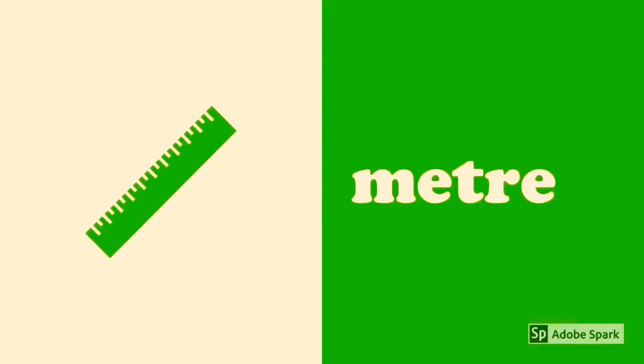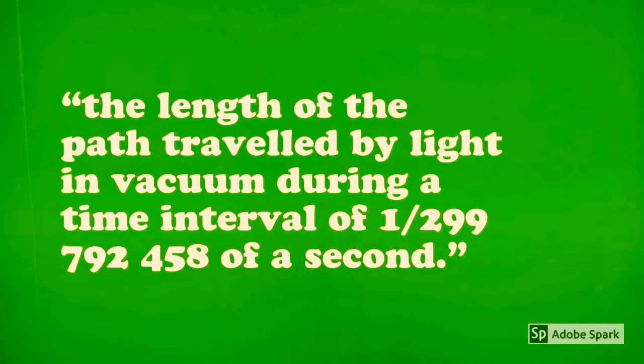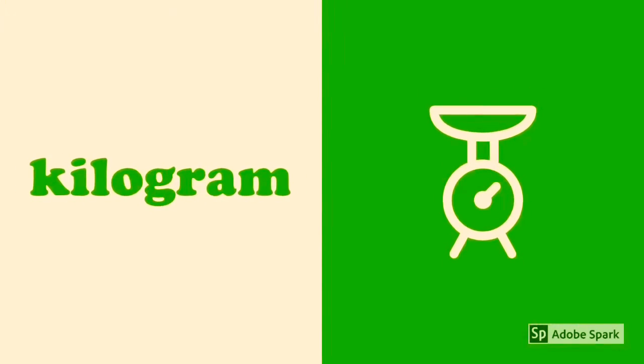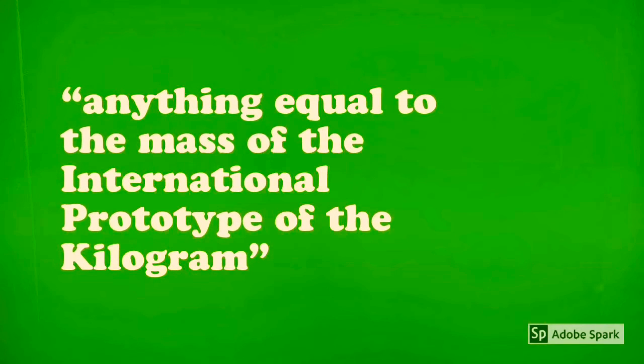They are the meter, which is defined as the length of the path traveled by light in a vacuum during a time interval of 1/299,792,458 of a second. The kilogram, which is defined as anything equal to the mass of the international prototype of the kilogram.